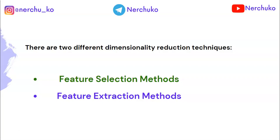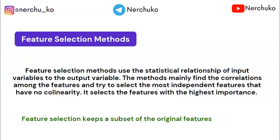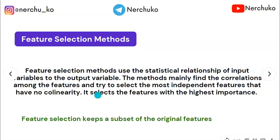The new dataset in feature extraction is completely new data — that is the difference between feature selection and feature extraction. Feature selection methods use the statistical relationship of input variables to the output variable. They find correlations among features and select the most independent features that have no collinearity, choosing features with the highest importance.